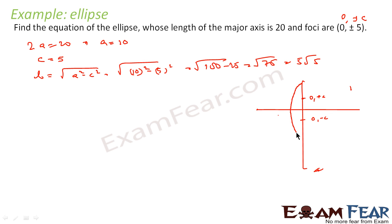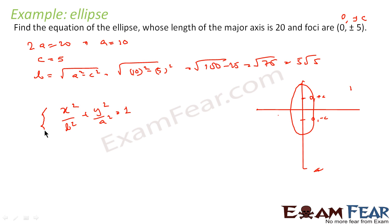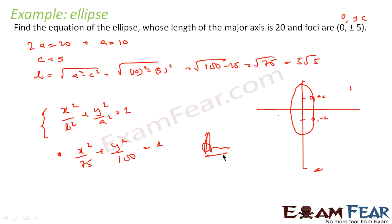For this case, the equation is x²/b² + y²/a² = 1. Putting in the values: x²/75 + y²/100 = 1, and that is the equation of the ellipse.